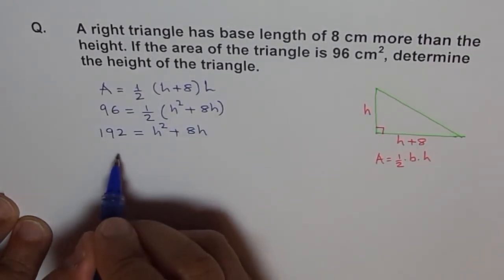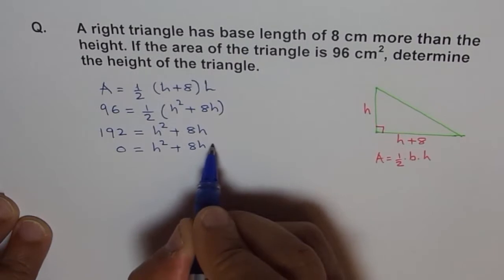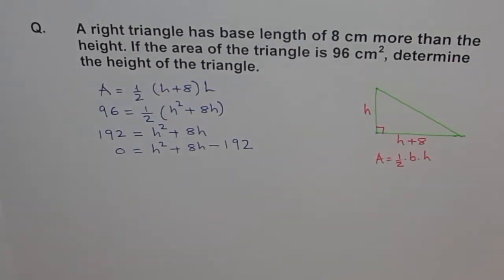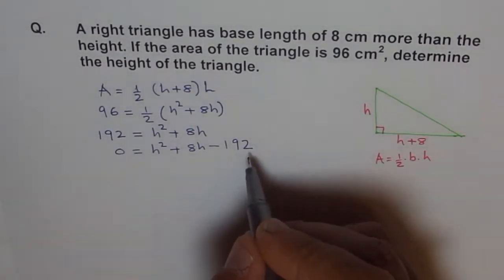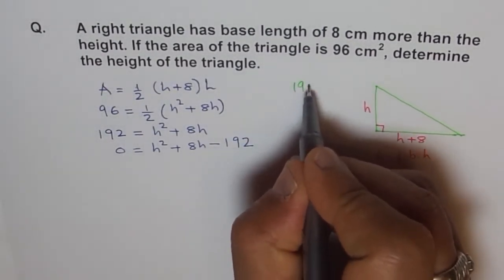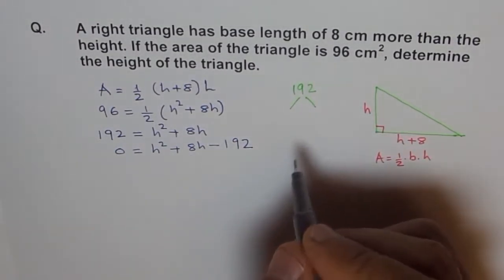I'll bring all the terms together and we have 0 equals to h square plus 8 h minus 192. And now, we need to factor it or we can also use quadratic formula to figure this out. So, we need 2 numbers whose multiple is 192 and whose sum is 8. One way to do it is we can try out factors of 192.